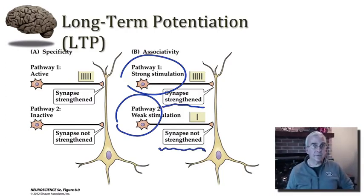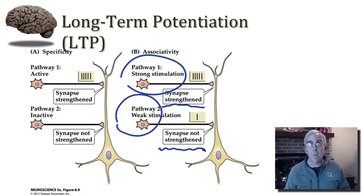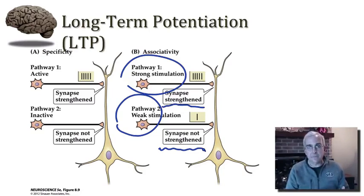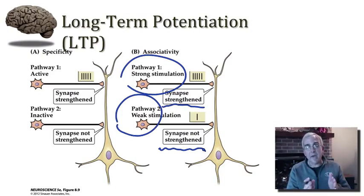One reason why we think this is so exciting is that this principle of long-term potentiation potentially provides a paradigm for understanding associative learning, where some reinforcing event, if paired with an event of a neutral nature, can now acquire the significance of the reinforcer. The pairing of a strong pathway with a weak pathway can lead to the potentiation of both.